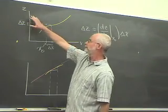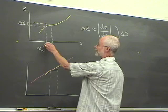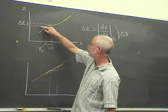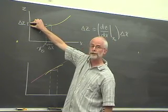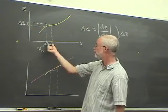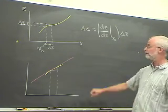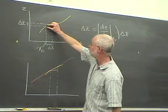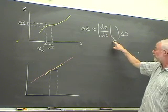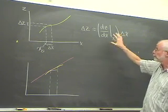Suppose we have some function z of x — it's this yellow curve. We know the value of z at some point x0, and we'd like to calculate the change in the function z when x changes by some small amount delta x. So we're looking for delta z. We know delta x and we know x0. A standard application of derivatives in calculus tells us that an approximate expression for the change in the value of the function is that delta z is approximately equal to the value of the derivative evaluated at the point x0, multiplied by delta x.